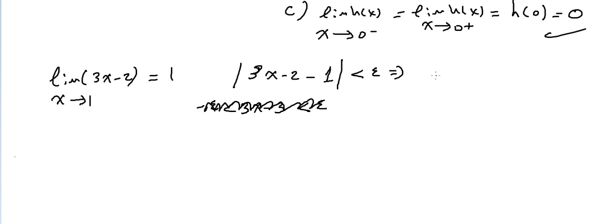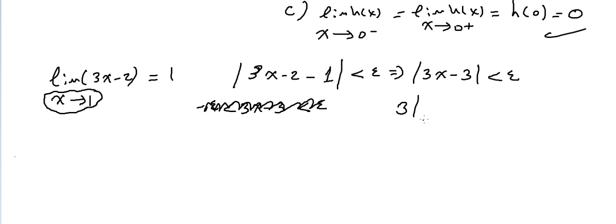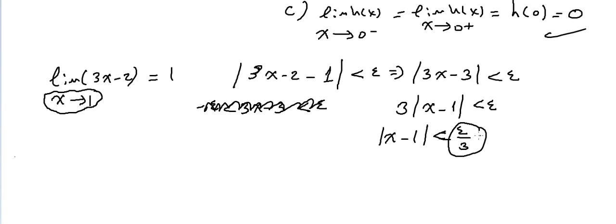Since X approaches 1, we need X minus 1. We take the absolute value of 3X minus 3 less than epsilon, factor out 3 (a positive number), giving 3 times the absolute value of X minus 1 less than epsilon. Dividing both sides by 3 gives the absolute value of X minus 1 less than epsilon over 3. Therefore Delta equals epsilon over 3.